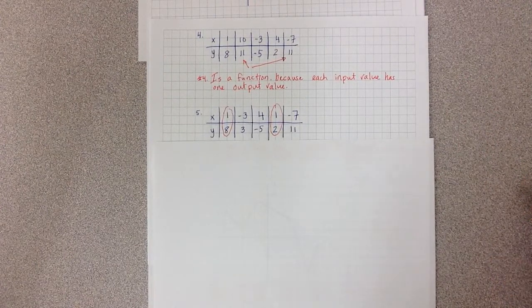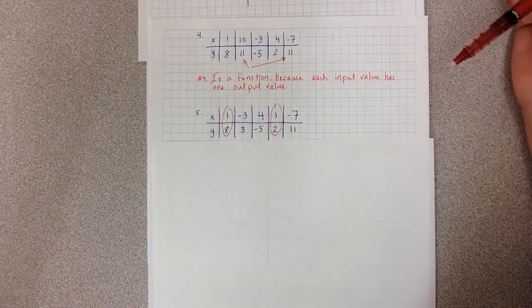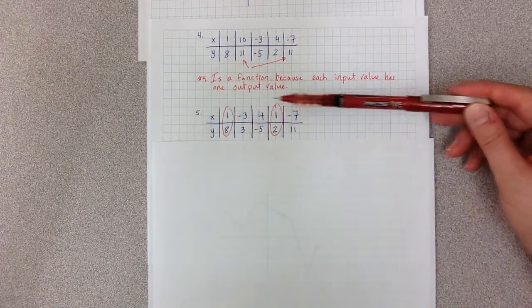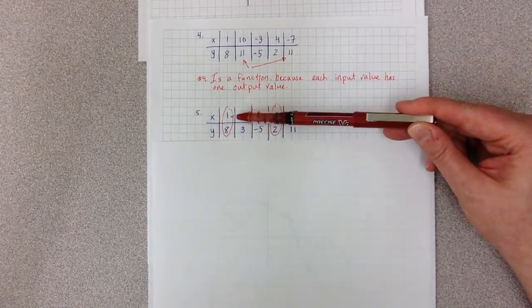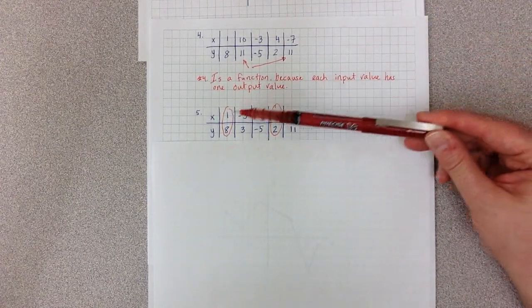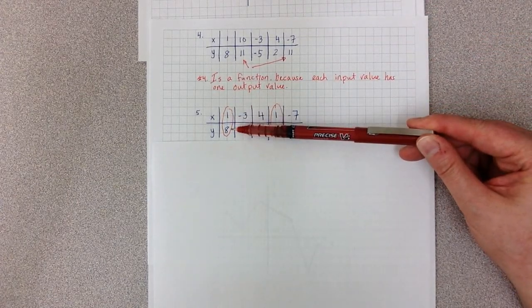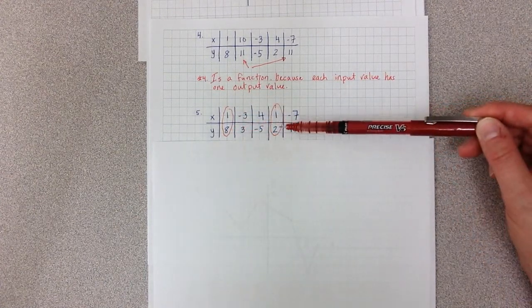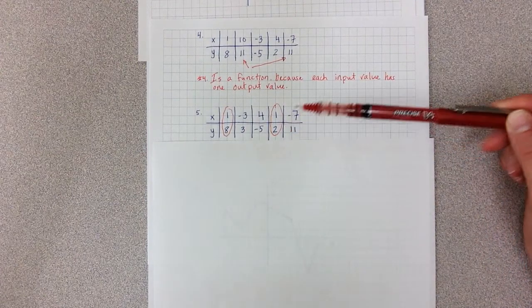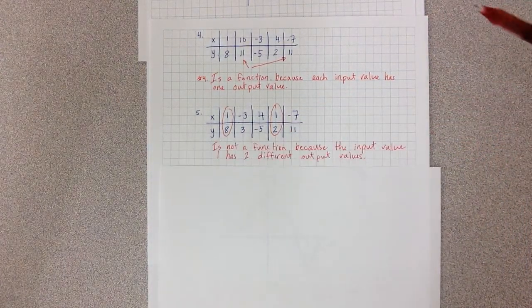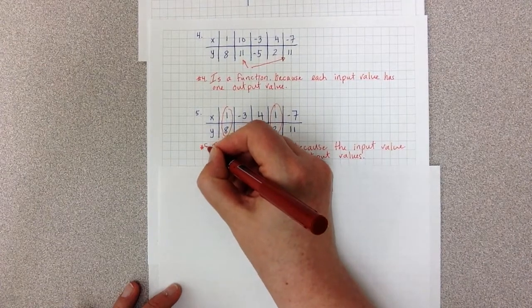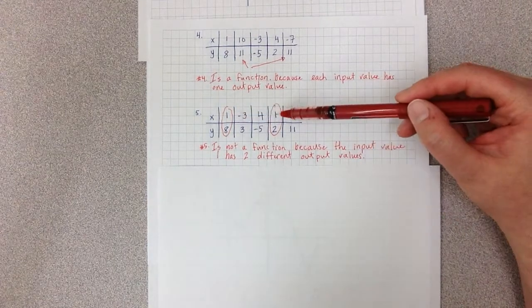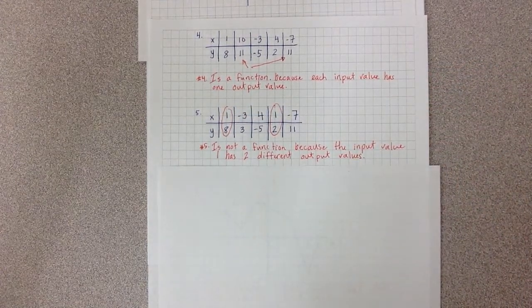Number 5, I've already circled the worrisome part of this problem, which is that my 1 in the input values repeats. I've got a 1 here and a 1 here. So in this case, when I say 1, you would say 8. And then when I say 1 again, you would say 2. But 8 and 2 aren't the same number, so that makes this not a function. Number 5 is not a function because the input value 1 has two different output values.